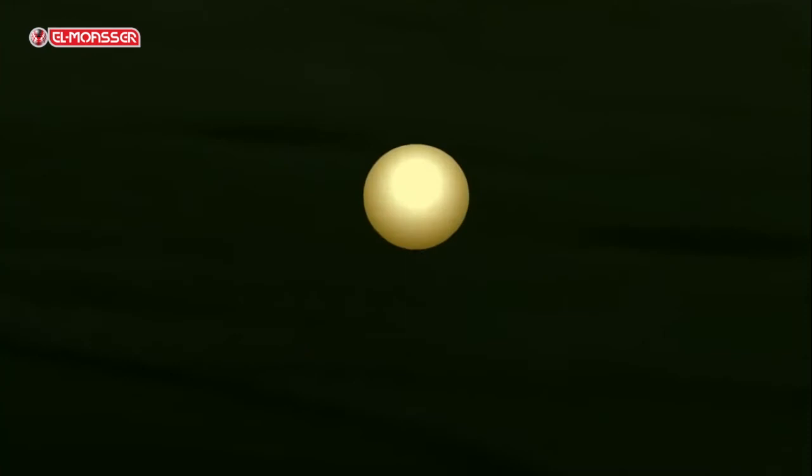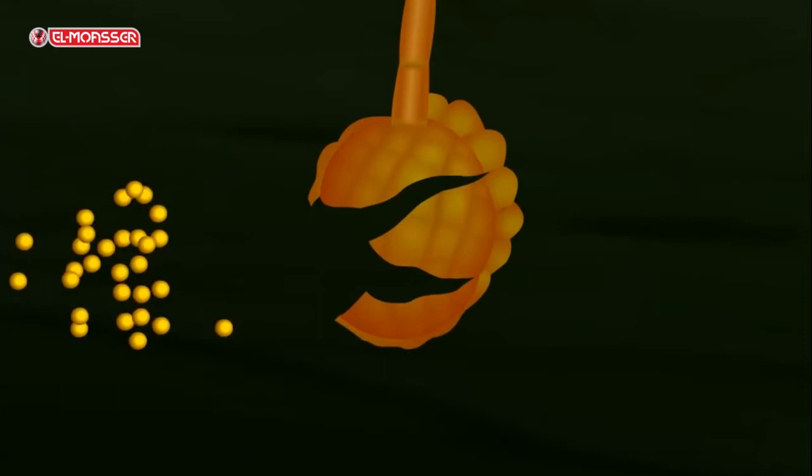Each spore cell divides meiotically to form four haploid spores (n). On the spores maturation, they are released from the sporangia and carried by the wind to far distances.